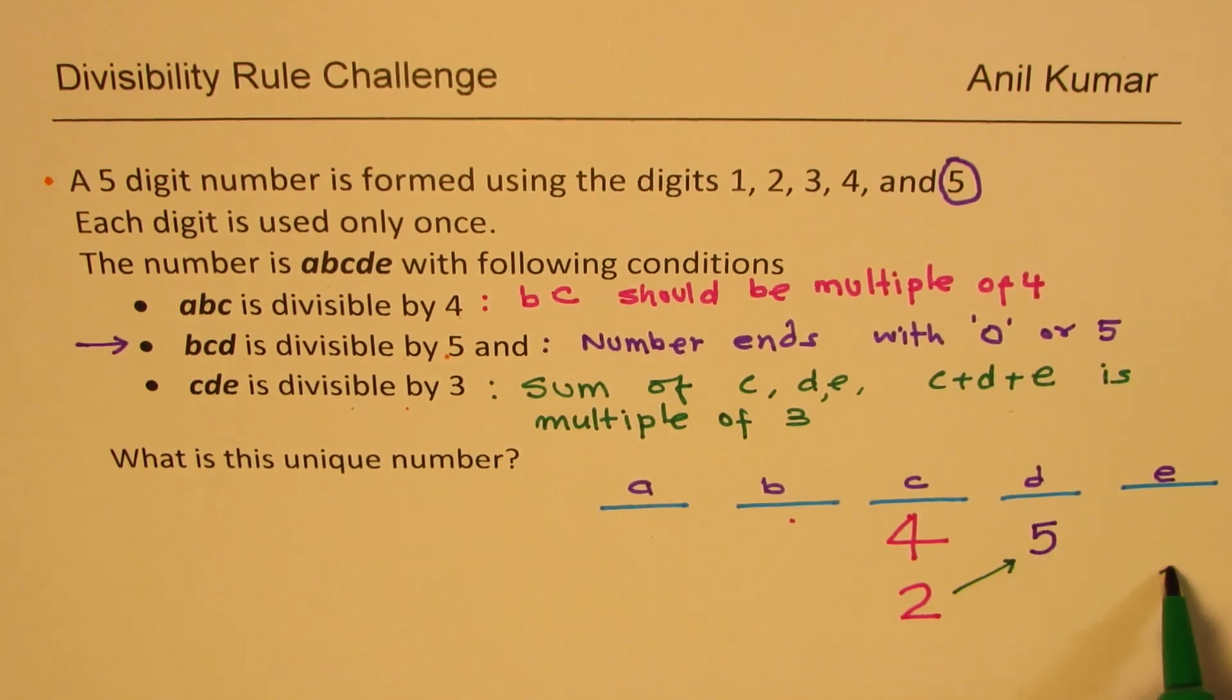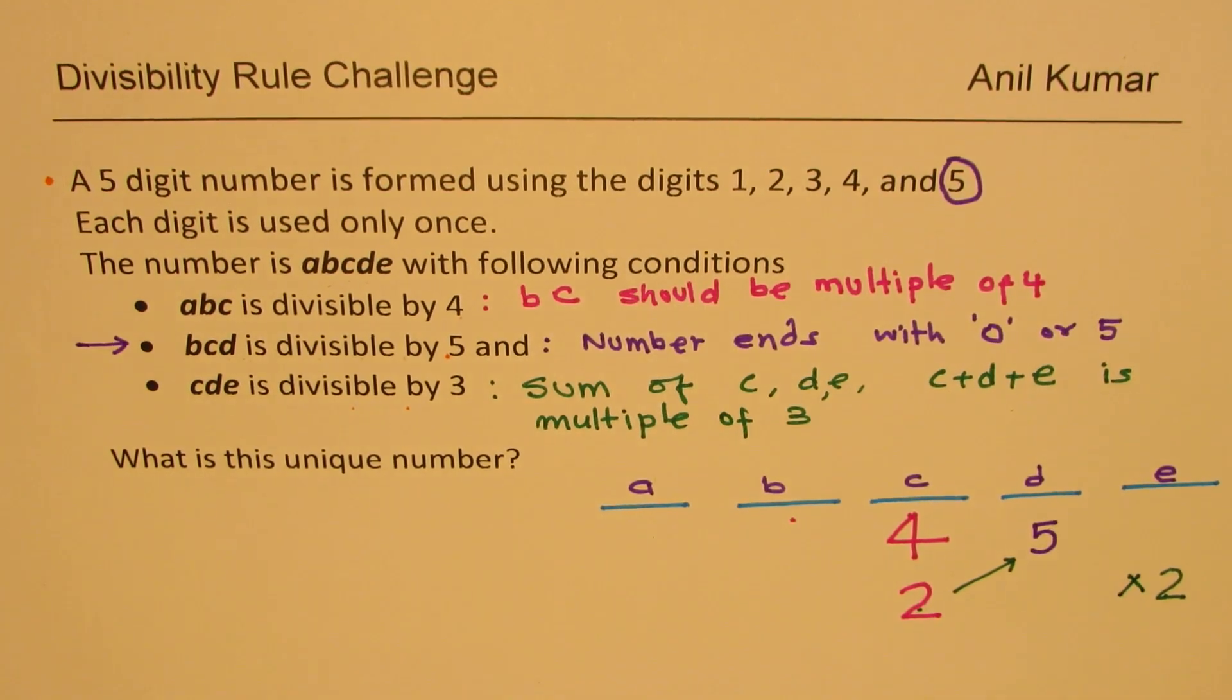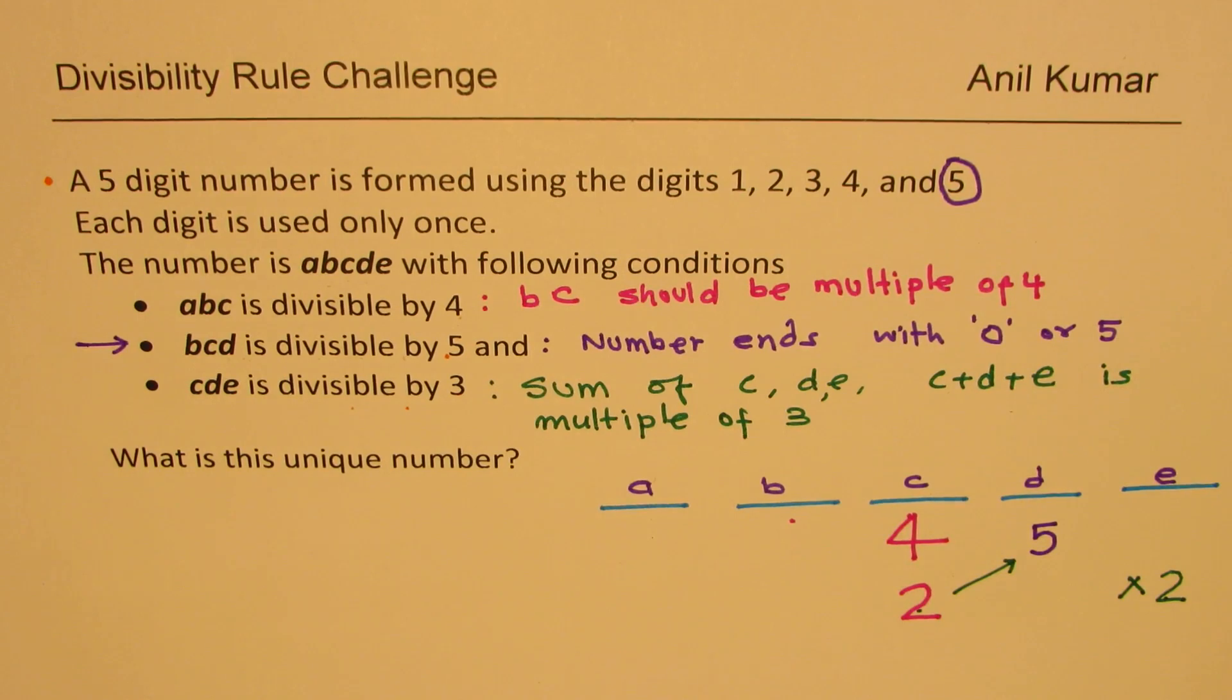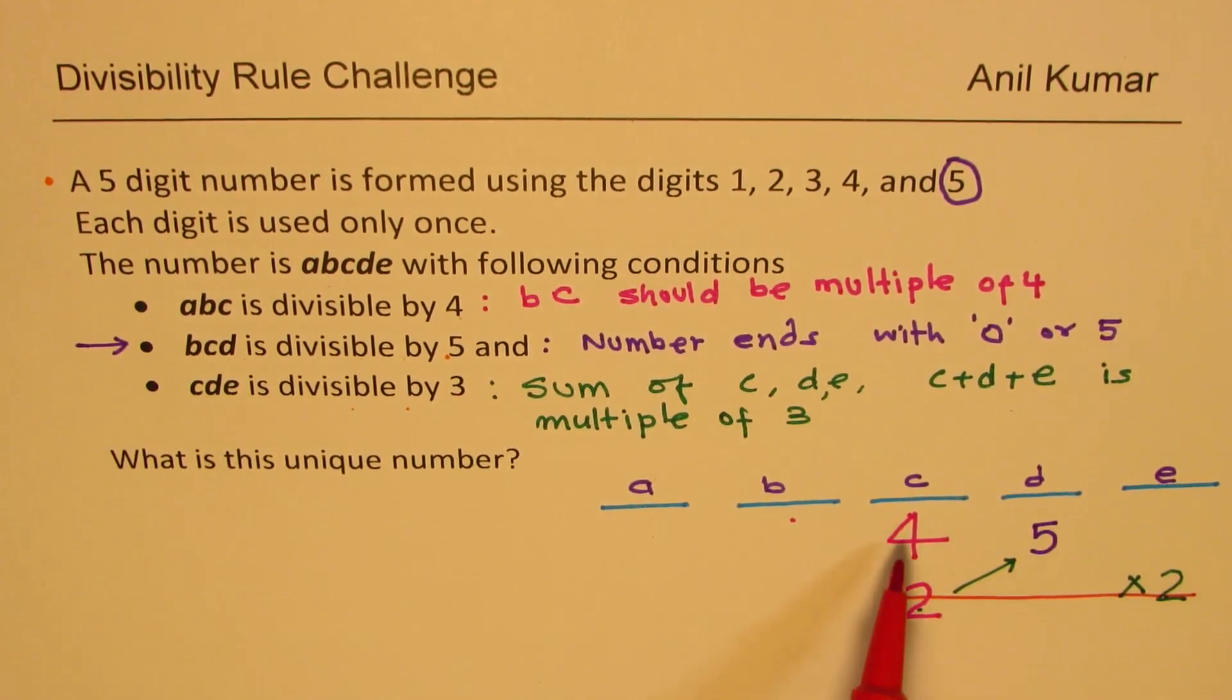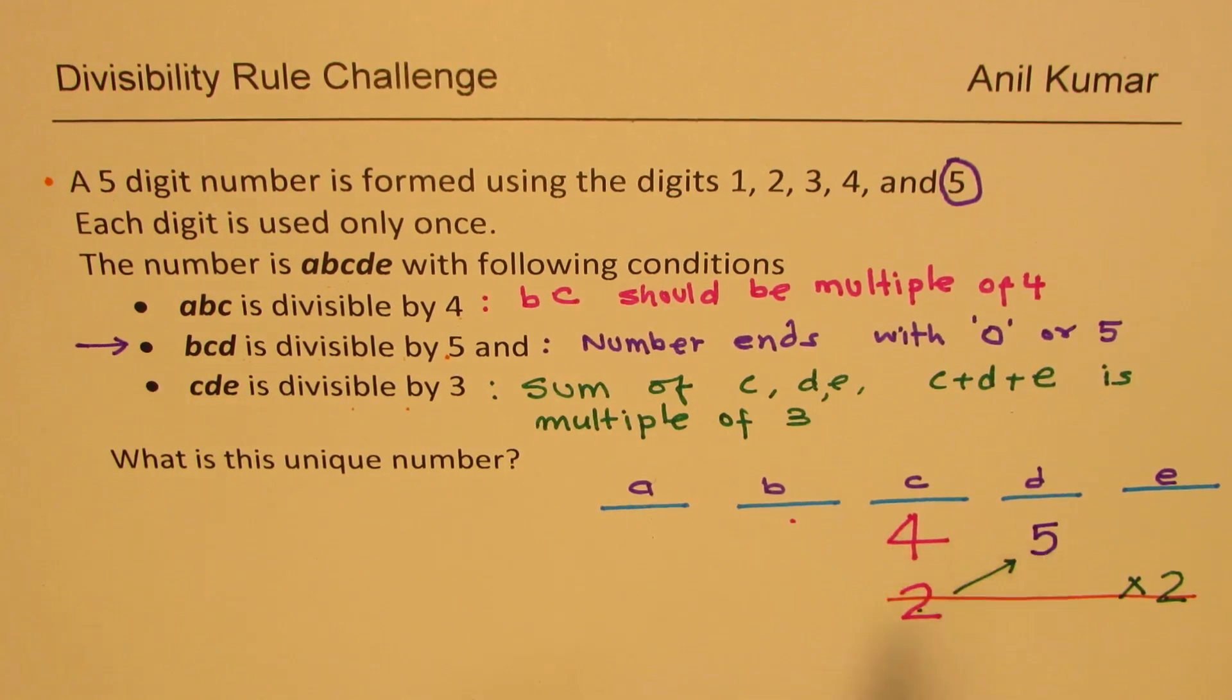So I could have 2, but since I already have 2, we cannot repeat it. So that is not the right option. So we'll strike this off. This option does not work. So we're left with only one option, which is 4 and 5.